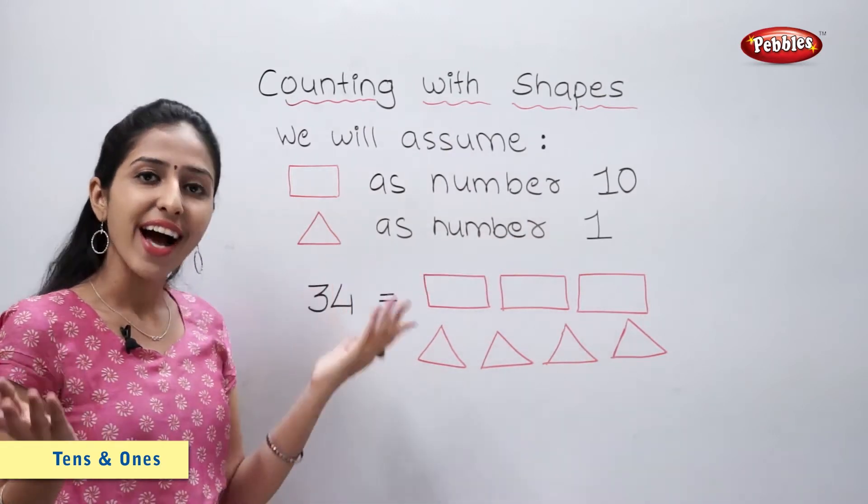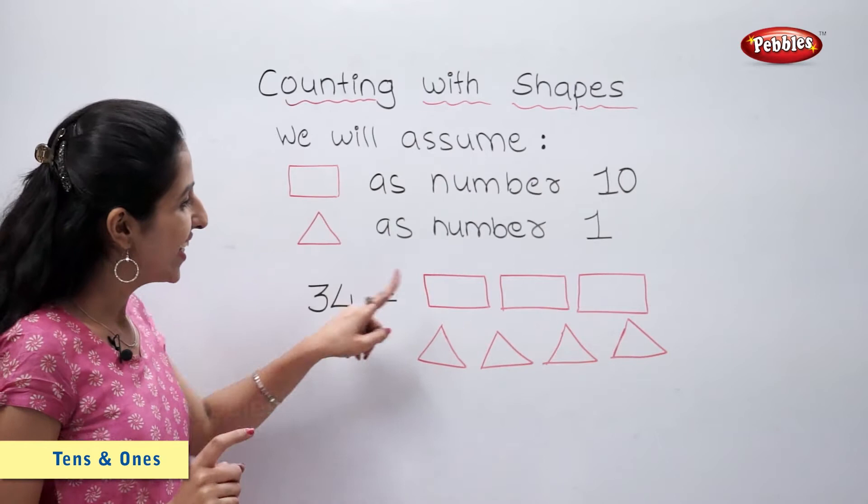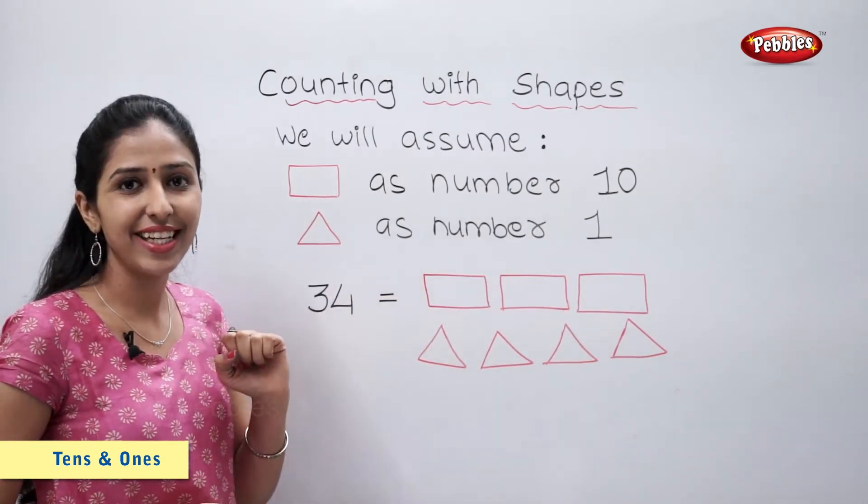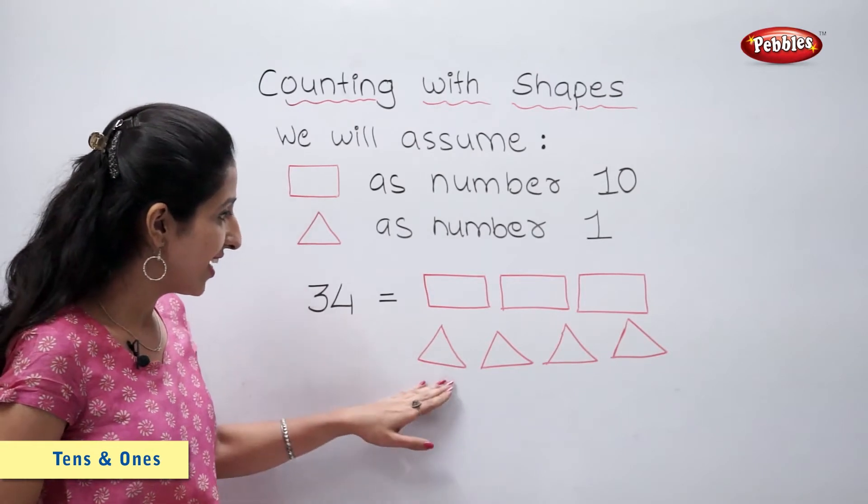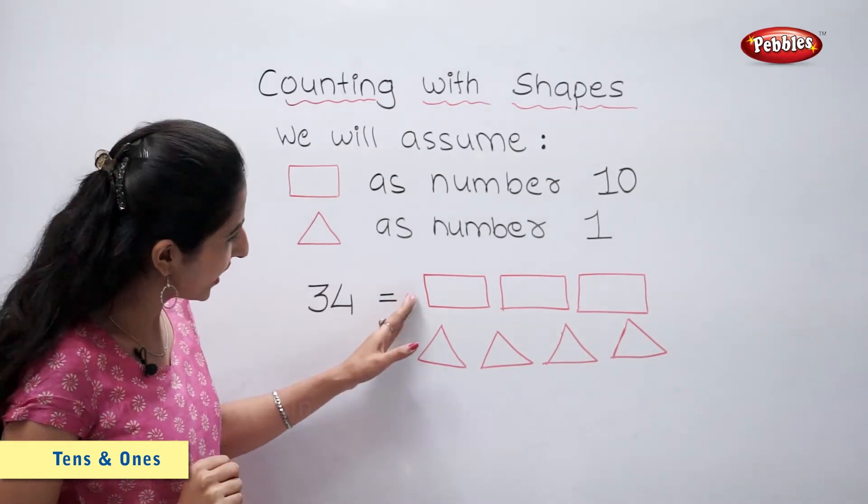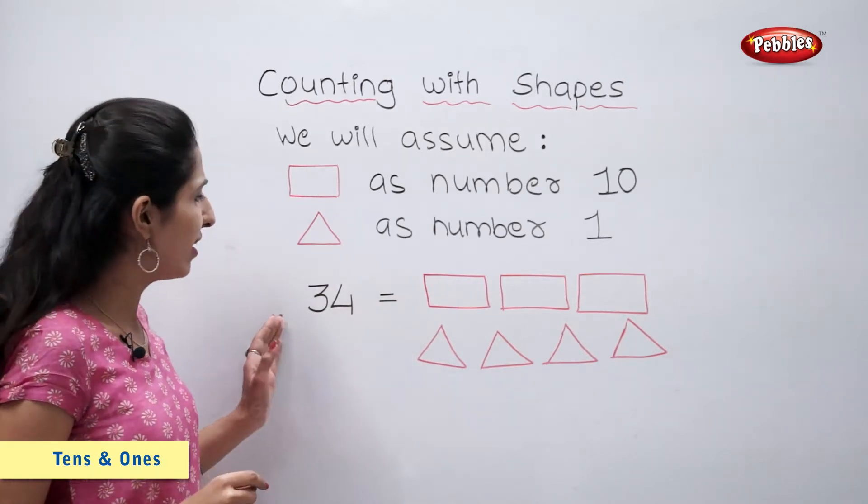So I can show number 34 as 1, 2, 3 - three rectangles and 4 triangles. So 3 rectangles, 4 triangles makes number 34.